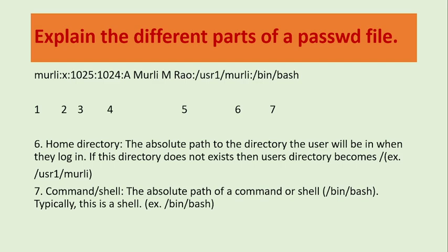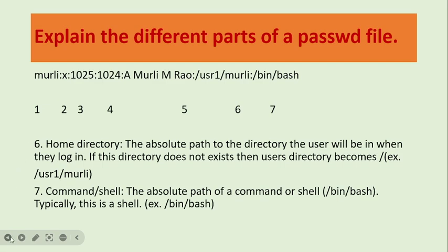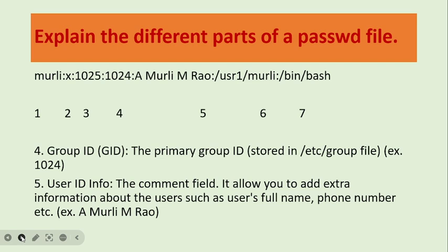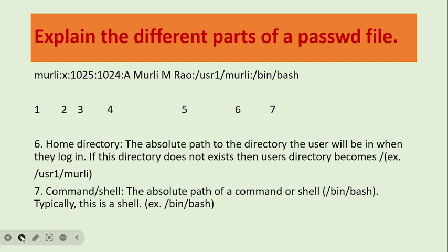The next and last field is the command shell — the absolute path of a command or shell, given as /bin/bash. So this is the entire entry. To recap: field 1 is the username, field 2 is the password, field 3 is the user ID (1025), field 4 is the group ID, field 5 is user ID information, and fields 6 and 7 are the home directory and command shell.